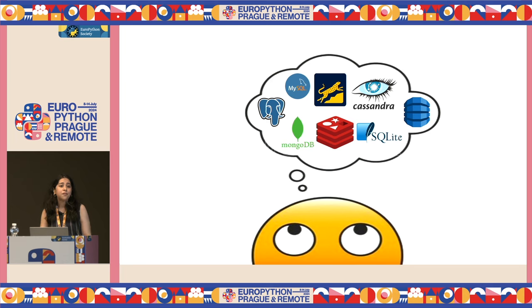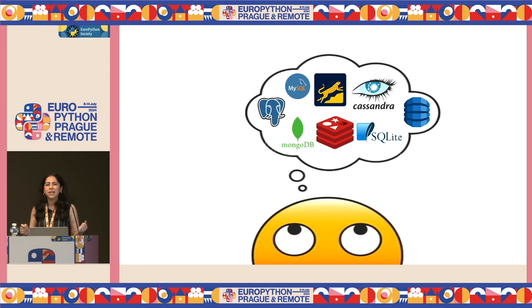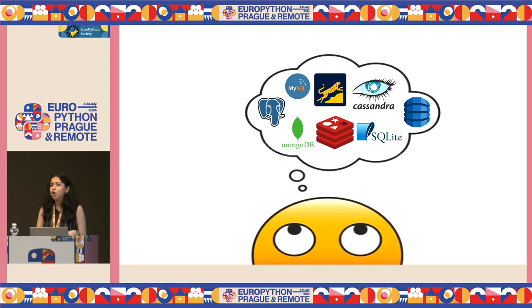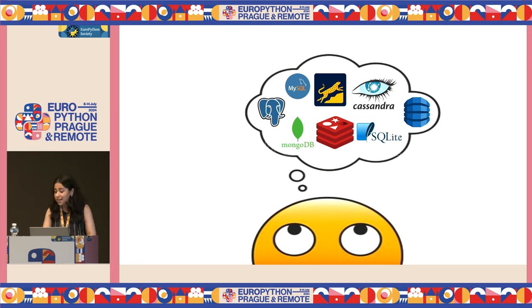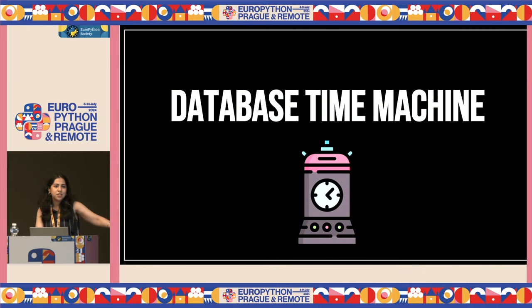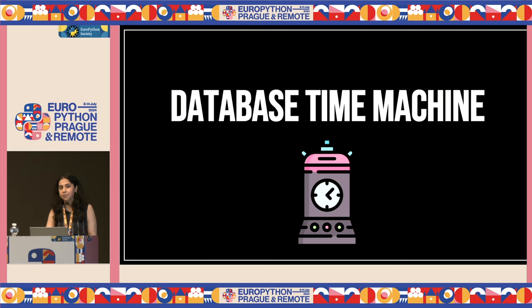This decision greatly influences the performance, the scalability, and the overall success of your project. So, should you go for something that has always worked for you, something you're familiar with, or should you choose something that is more aligned to the use case and explore the possibilities? Before we tackle that question, let's use a database time machine and go back to an important era in the history of databases.